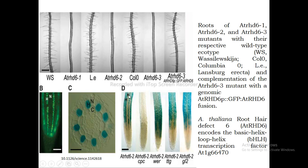Looking at CPC, which is a positive regulator of root hair growth, a mutation in CPC leads to no formation of root hair. Conversely, mutations in negative regulators result in most cells developing as root hair cells. This establishes the function of these proteins — they either negatively or positively regulate the development of epidermal cells into root hair cells. This covers the development of root hairs, their different patterns, and their arrangement in the epidermis.